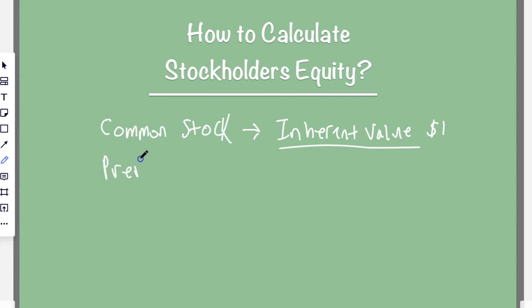Same with preferred stock. I like to think of preferred stock as VIP stock — only certain people can own those shares. They get more favor with the company: more voting rights, the stock is usually worth more, and they get first claims to dividends. So preferred shareholders are like VIP shareholders. Common stock usually comes last and is a lot cheaper, while preferred stock is more expensive to buy.